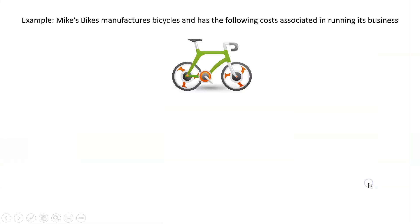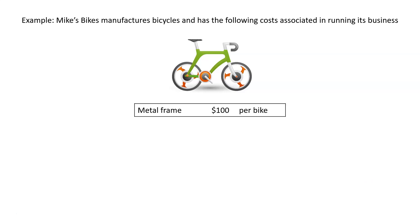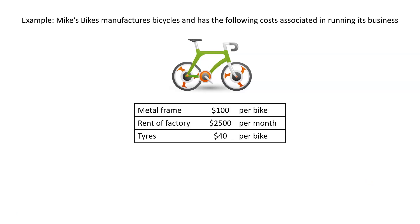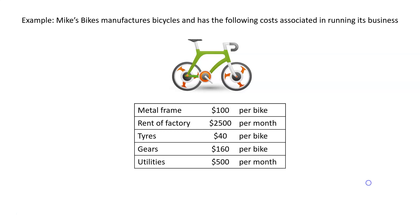To demonstrate the difference, let's use an example. Mike's Bikes manufactures bicycles and has the following costs associated with running its business: the cost of the metal frame of each bike is $100; the rent of the factory to make the bikes is $2,500 per month; the tires are $40 per bike; the gears are $160 per bike; the utilities — gas, electricity, etc. — is $500 per month; and the wages are $3,000 per month.